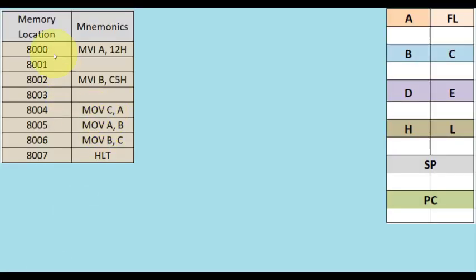Now let us see the code. We are using memory location 8000 — we will write the program starting from 8000. At 8000 we have MVI A, 12H, storing 12H in A. MVI A is a 2-byte instruction. Then MVI B is also a 2-byte instruction — we store C5 in B. Then we use a dummy register C: we transfer contents from A to C, then B to A, and then whatever is in C — which is actually the original contents of A — is transferred to B.